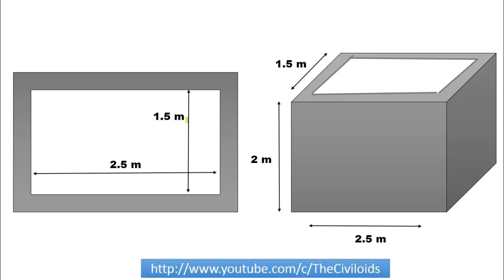Remember that for calculating the water carrying capacity of a water tank, its internal dimensions are necessary. You can see that a rectangular water tank is given. Height of the rectangular water tank is 2 meters, its internal width is 1.5 meters, and its internal length is 2.5 meters.